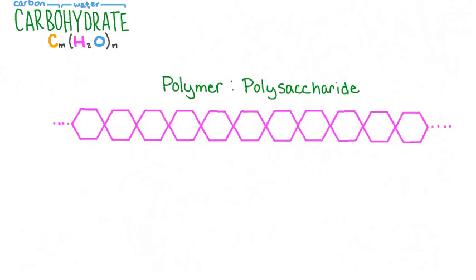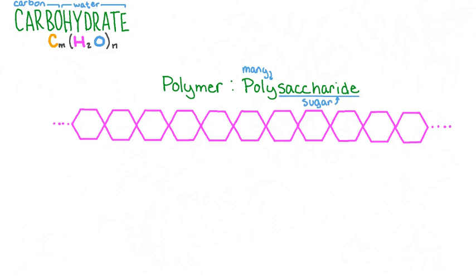Carbohydrates are molecules that contain carbon, hydrogen, and oxygen in a particular ratio. Polymer carbohydrates are also referred to as polysaccharides. Saccharide means sugar. We've learned that polymers are made of repeating units called monomers. The monomers that make up polysaccharides are called monosaccharides, or simple sugars.